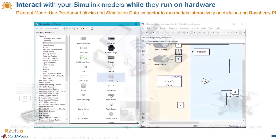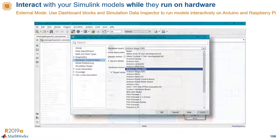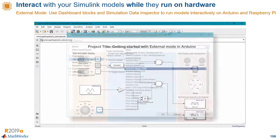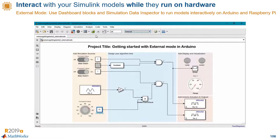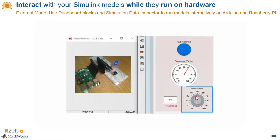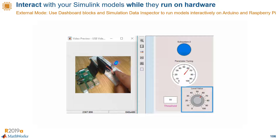The last highlight in the hardware section is the ability to use dashboard blocks and simulation data inspector while running the model in external mode. You can see from the video that the dashboard block is interacting with the physical hardware, and there is data going back and forth between the hardware and the model. This works for dashboard blocks, simulation data inspector, and scopes.